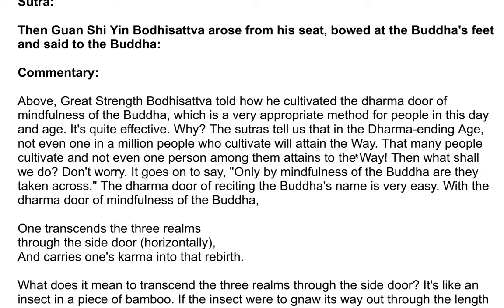The sutras tell us that in the Dhamma Ending Age, not even one in a million people who cultivate will attain the way. Then what shall we do? Don't worry. It goes on to say: only by mindfulness of the Buddha are they taken across. The Dhamma door of reciting the Buddha's name is very easy. With the Dhamma door of mindfulness of the Buddha, one transcends the three realms through the side door horizontally and carries one's karma into that rebirth.